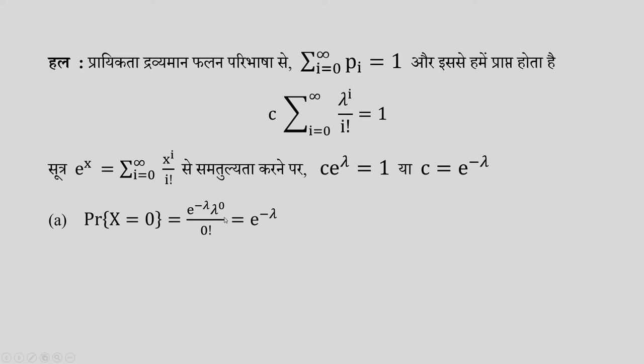इसमें i का मान 0 रखते प्रतिस्थापित कर दें तो हम देख सकते हैं कि वह सरलित होकर - चूँकि किसी भी स्थिरांक के घात 0 का मान एक होता है और 0 का क्रमगुणित का मान भी एक होता है, अतः यह मान e के घात ऋण λ के रूप में प्राप्त हो जाता है। इसी तरह अब हमें प्रायिकता निकालनी है जबकि हमारा यादृच्छिक चर का मान दो से बड़ा होता है तो वह प्रायिकता एक पूरक प्रायिकता के रूप में लिखी जा सकती है।